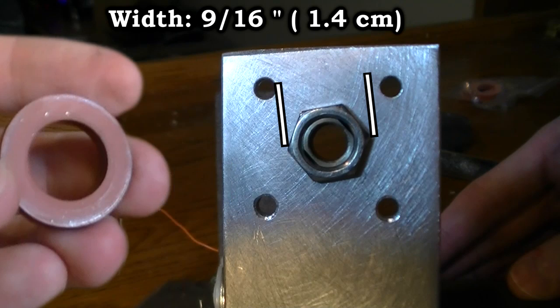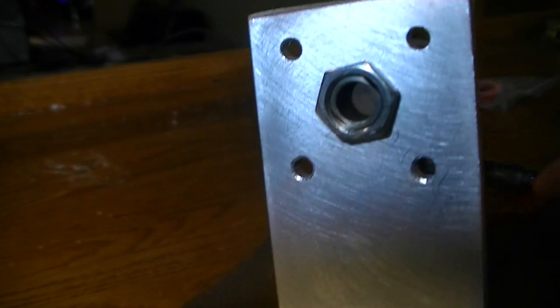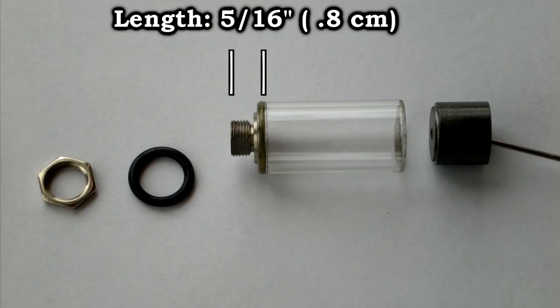I widened the hole in this actuator to 1 quarter inch which is as wide as I could drill it without ruining the threads on the threaded end. This quarter inch hole is 5 sixteenths long.